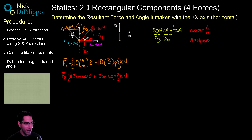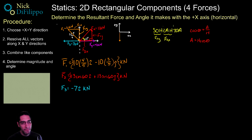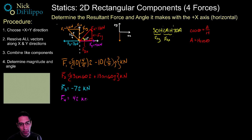F3 and F4 are already in the x direction, so they're easy. F3 = −7i kilonewtons because it points to the left, opposite to the positive direction. F4 = +4i kilonewtons because it points to the right.